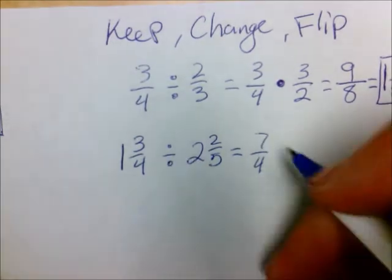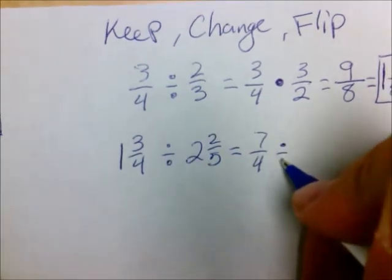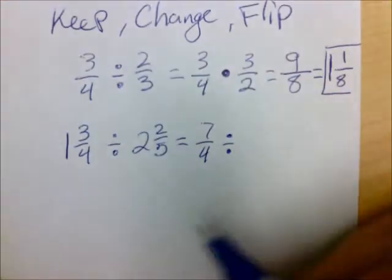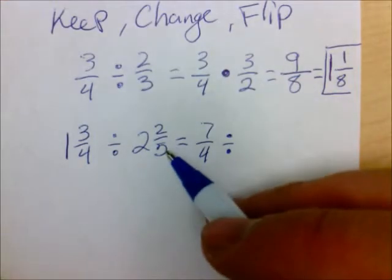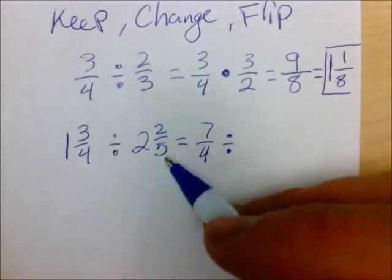I have not done anything, so it's still a division sign. And then two fifths, two times five is ten, plus two is twelve, keep the five.